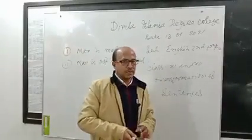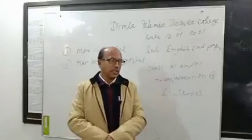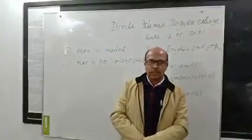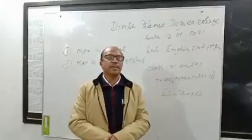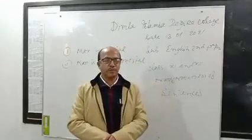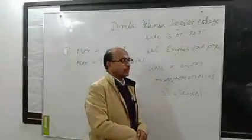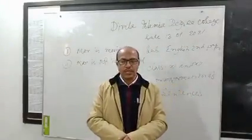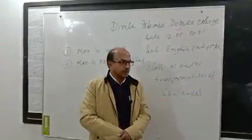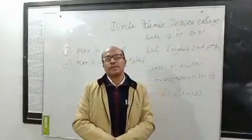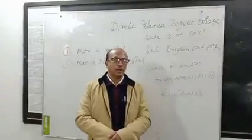Transformation of Sentences includes voice and degree. We know that sentences are divided into two types depending on structure and meaning. According to structure, sentences are divided into three types: simple, compound, and complex. According to meaning, sentences are divided into five kinds: assertive, interrogative, imperative, optative, and exclamatory. Voices are of two types: active and passive. Degree can be divided into three types: positive, comparative, and superlative.